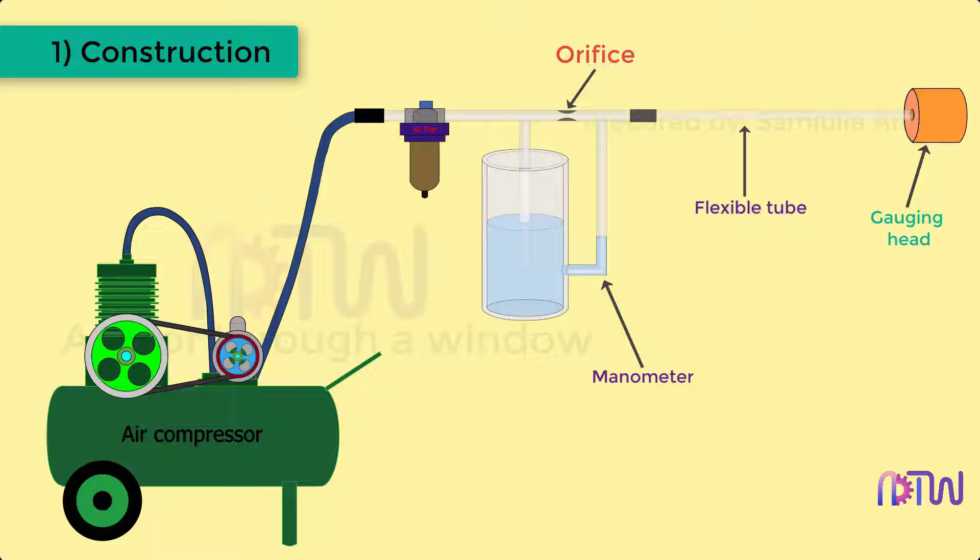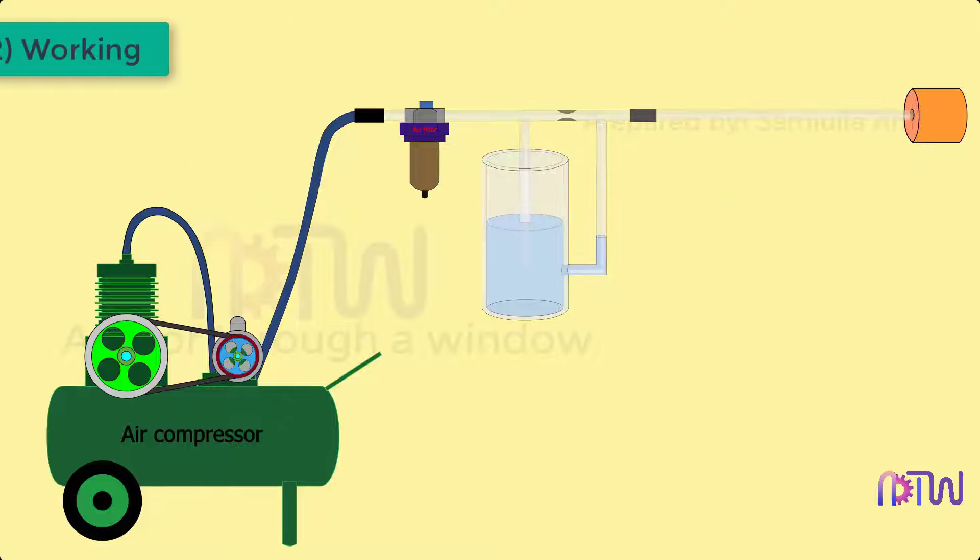Gauging head. The second chamber is also connected by a flexible tube to a gauging head. This gauging head has two restricting jets that are used to check unevenness or irregularities in the workpiece.